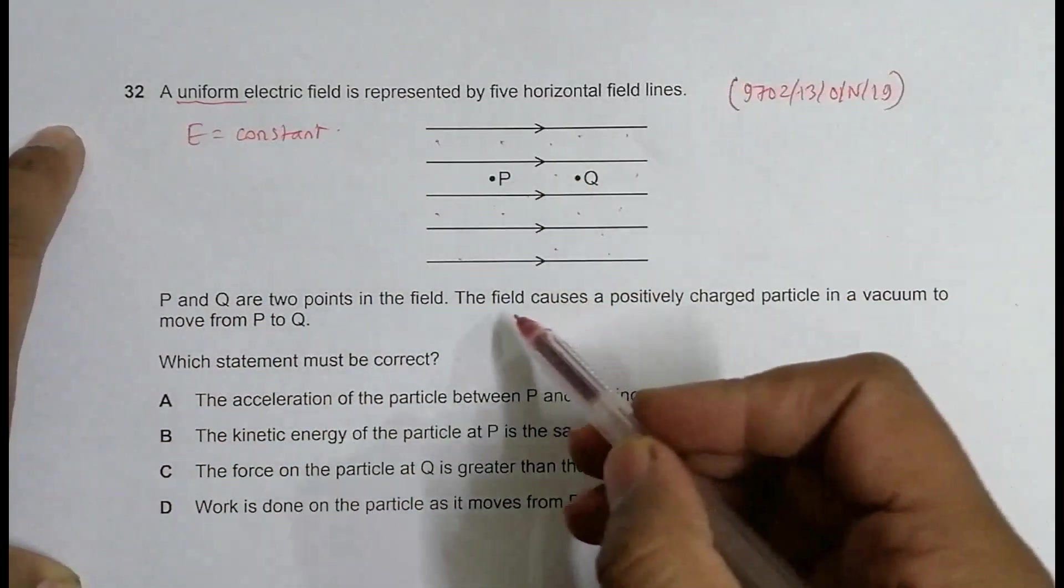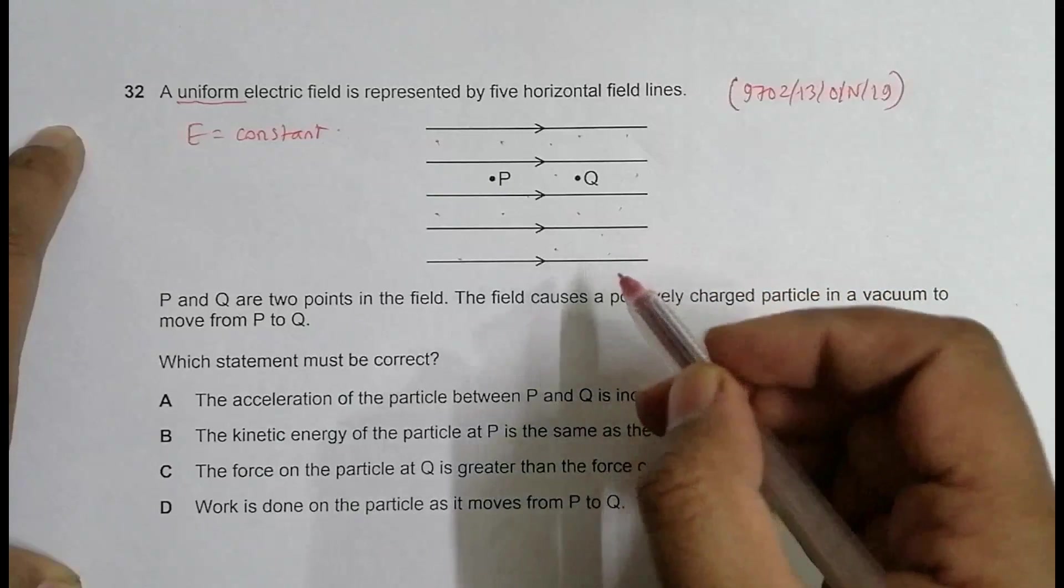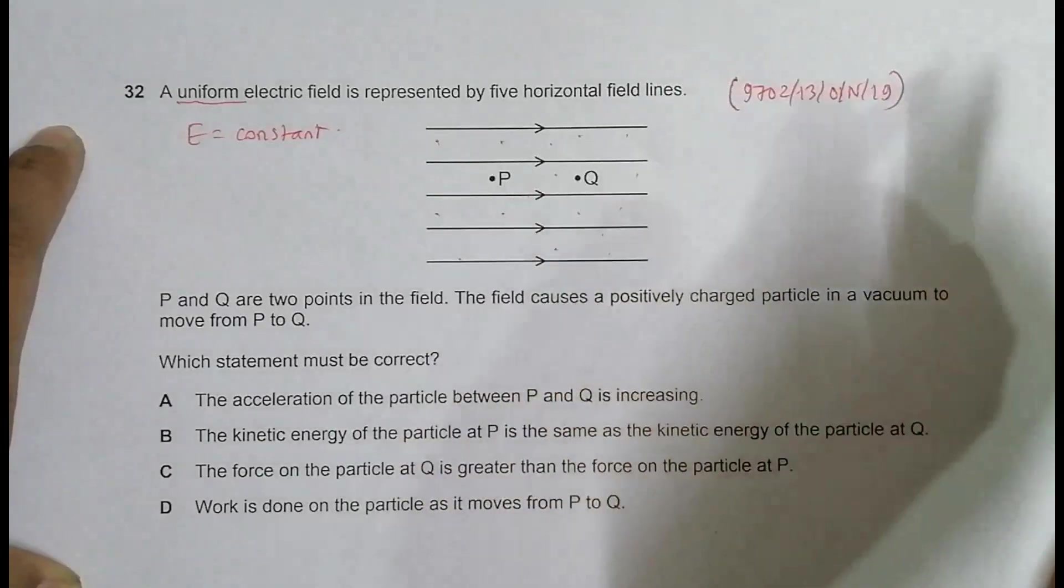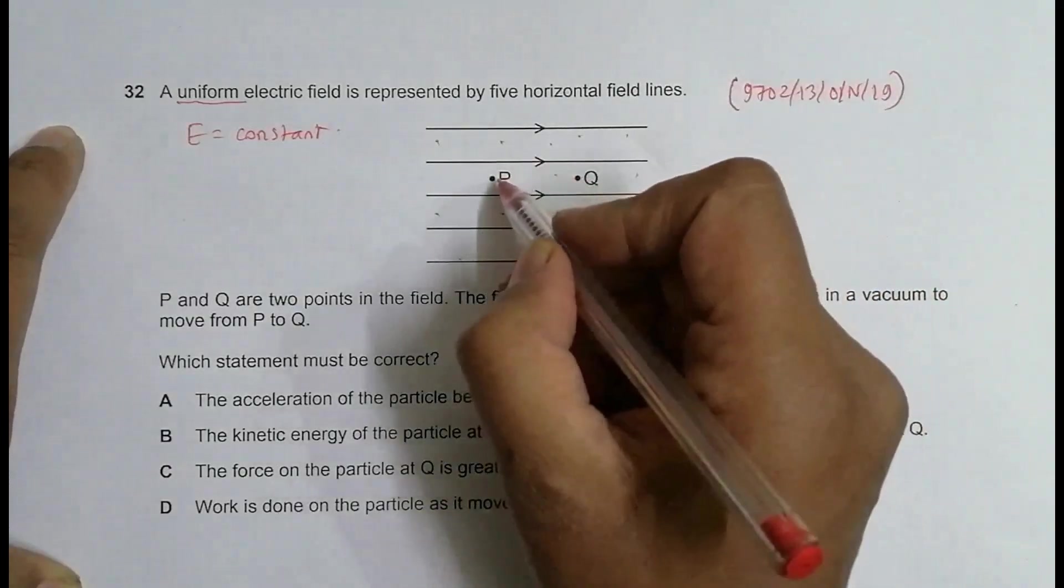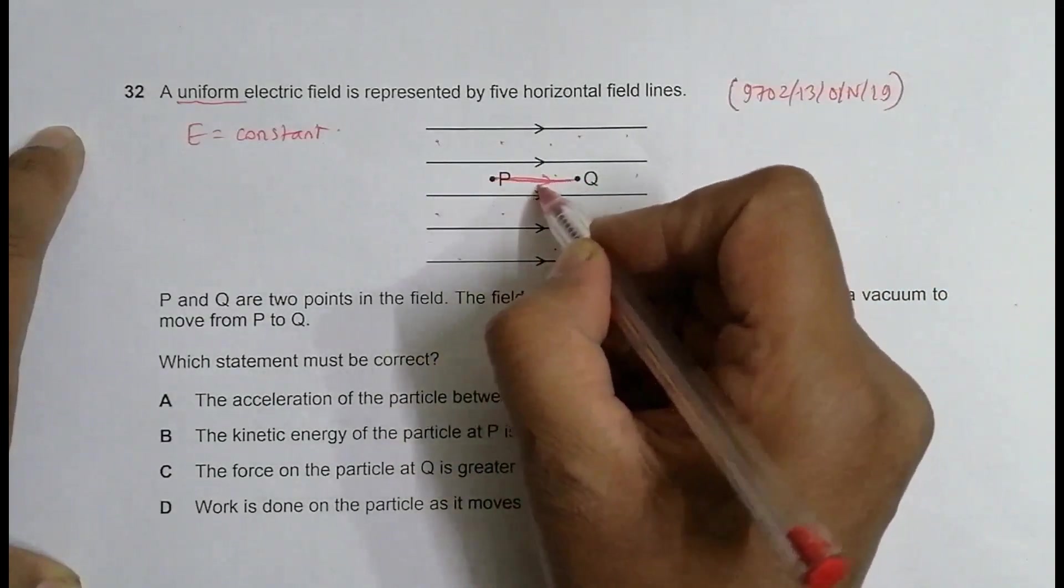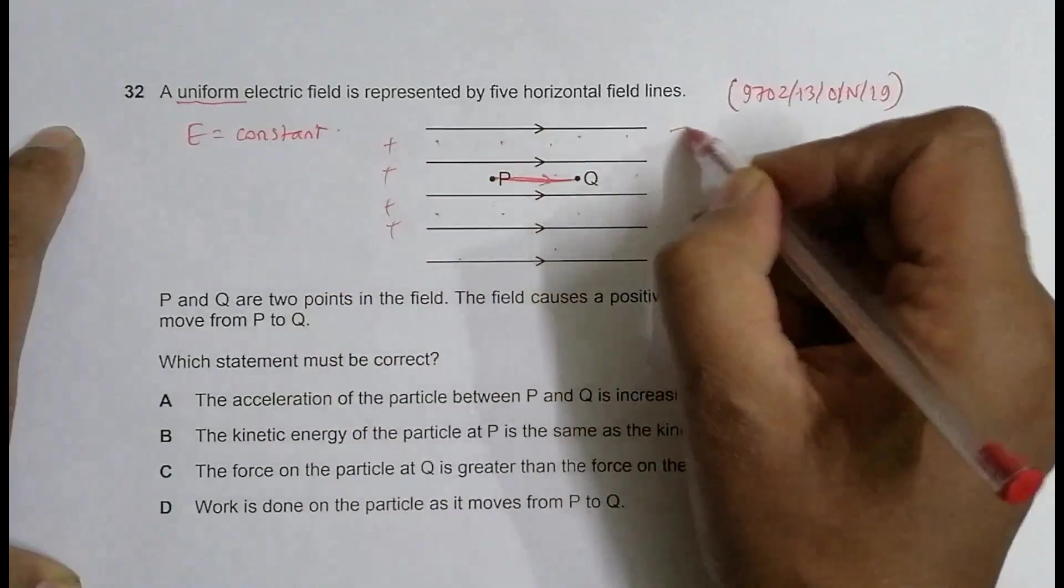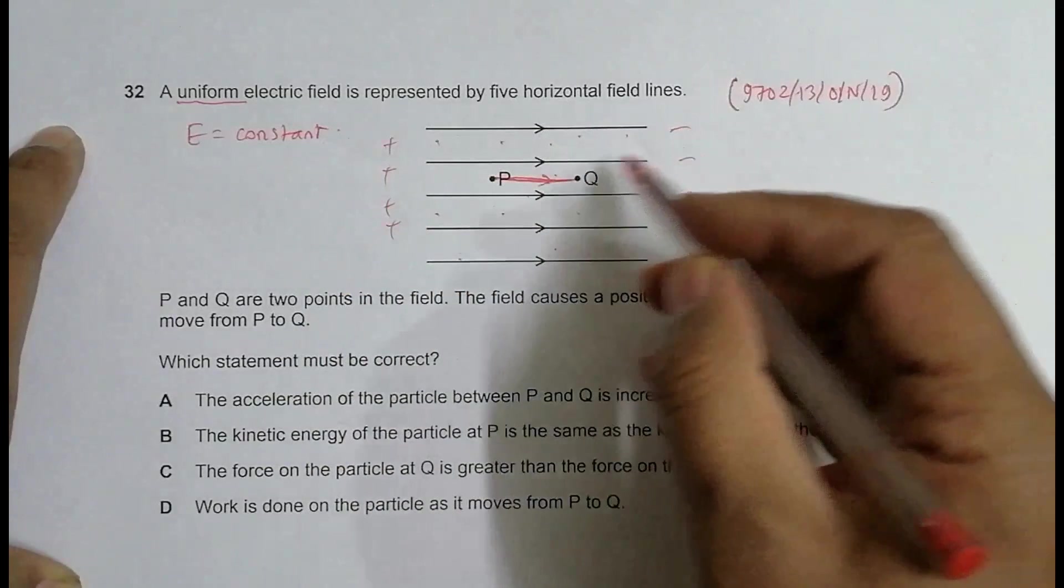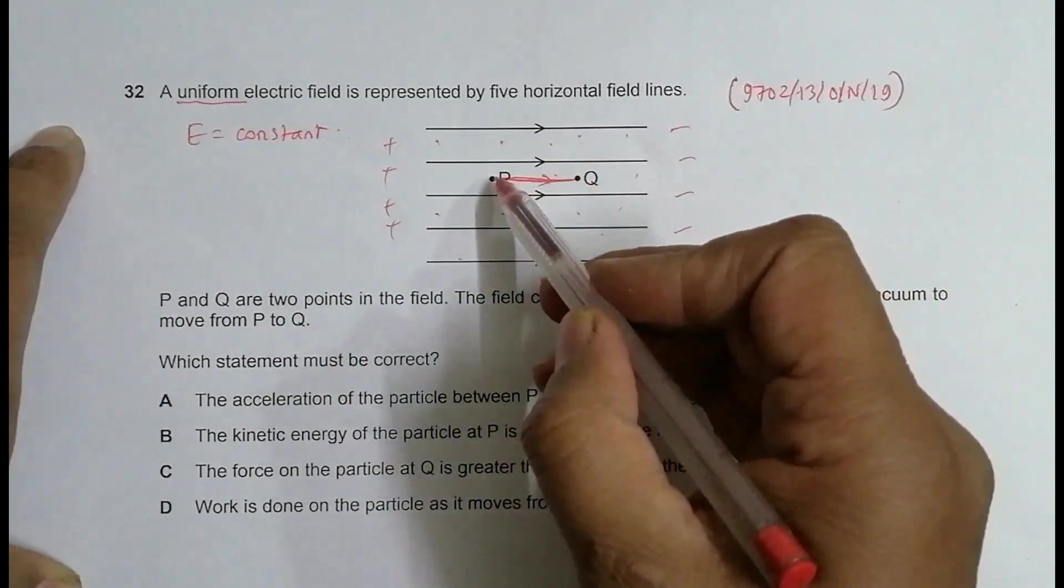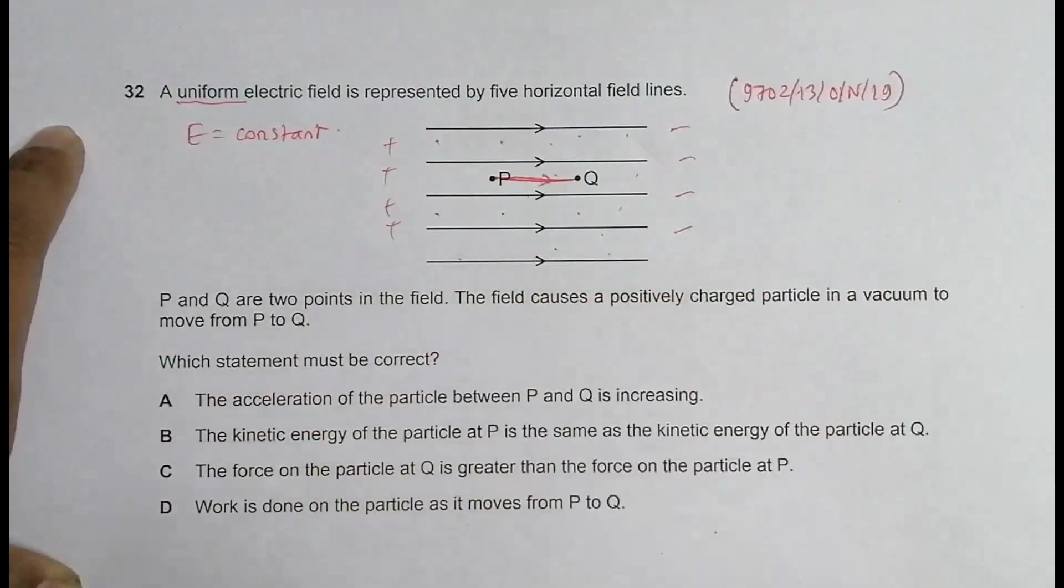P and Q are two points in the field. The field causes a positively charged particle in a vacuum to move from P to Q. So because of the field, a positively charged particle moves from here to here. So it has to move because the field is like this. Here it should be positive and here it should be negative. So definitely this type of field will exert force in this direction on any positive thing.